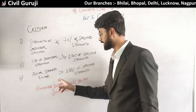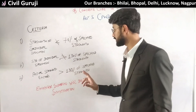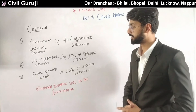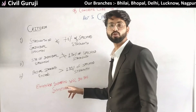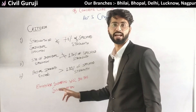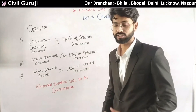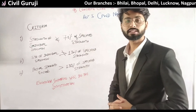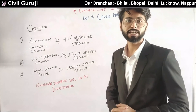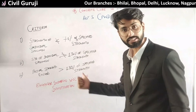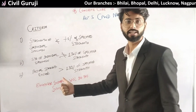The third criteria states that if the actual strength exceeds 130% of the specified strength, then the engineer in charge will conduct an investigation and take action. This means if actual strength is more than 130% of the specified strength, a review is required.